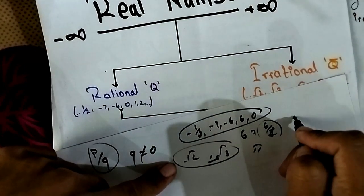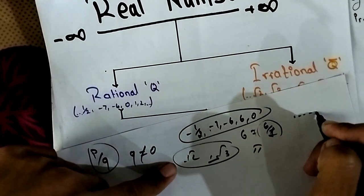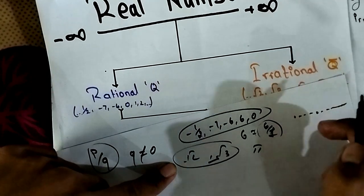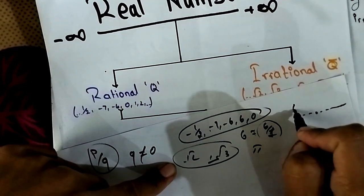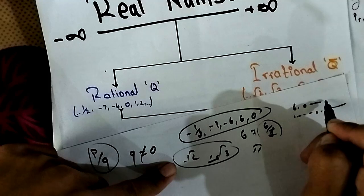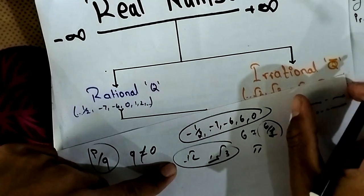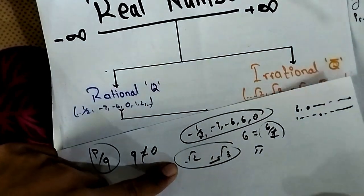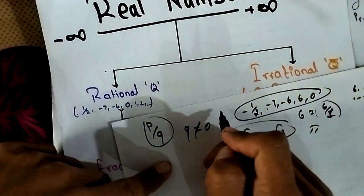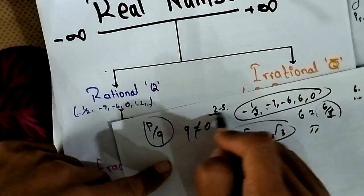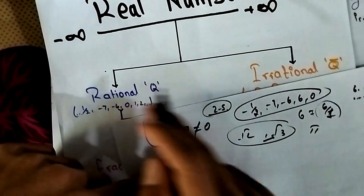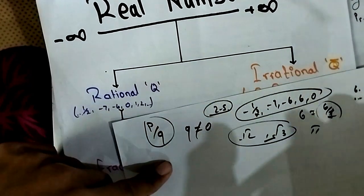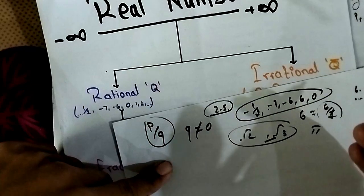Here we have an infinite number line. We have the point 2, then 2.0, then 2.5 points, then 4.5 points, which is also 5 points on the line.